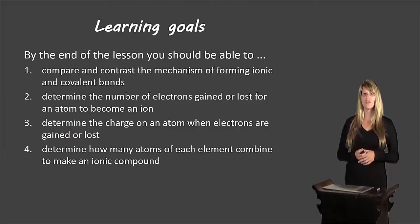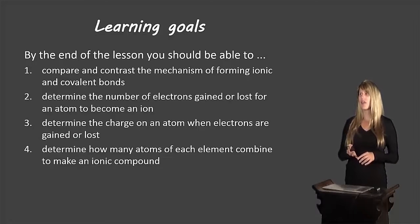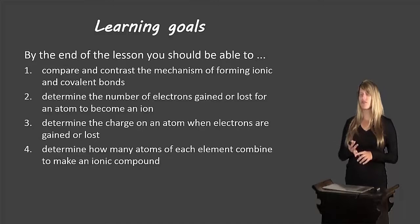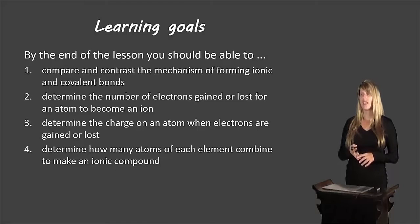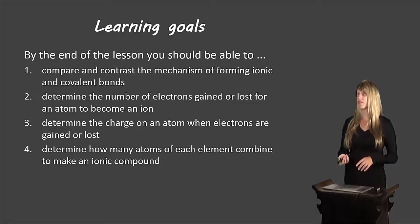We have quite a few learning goals for today. You should be able to compare and contrast the mechanism of forming ionic and covalent bonds, determine the number of electrons gained or lost for an atom to become an ion, determine the charge on an atom when electrons are gained or lost, and determine how many atoms of each element combine to make an ionic compound.